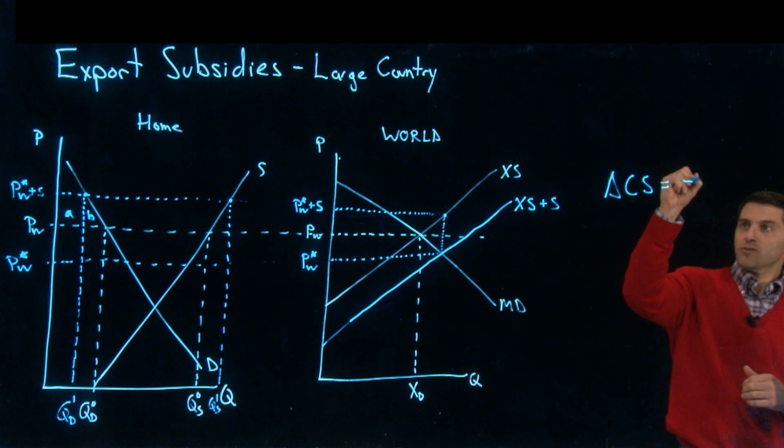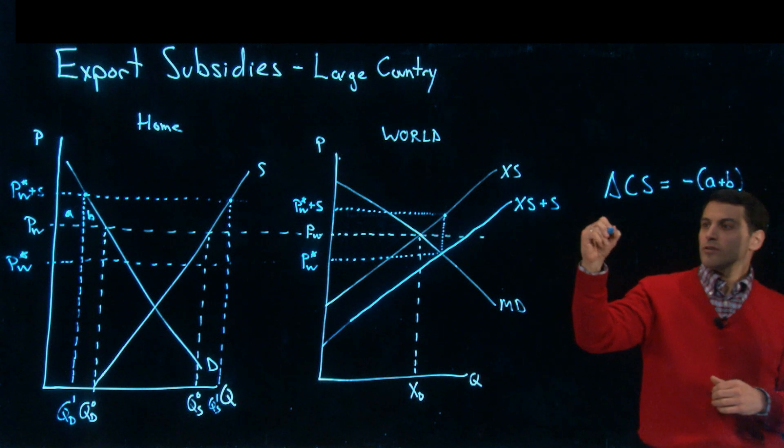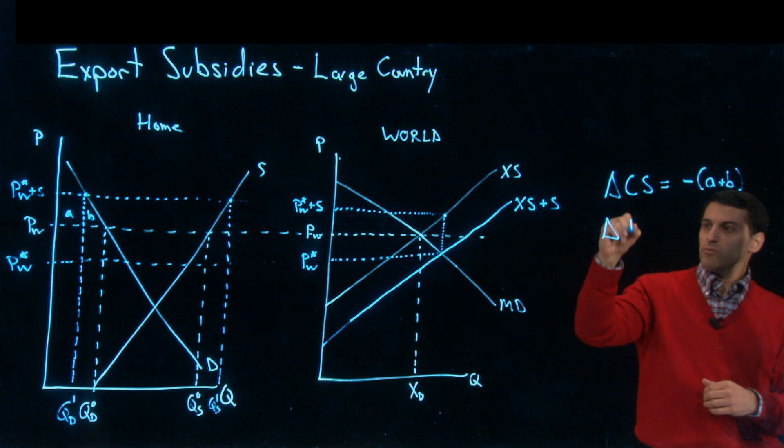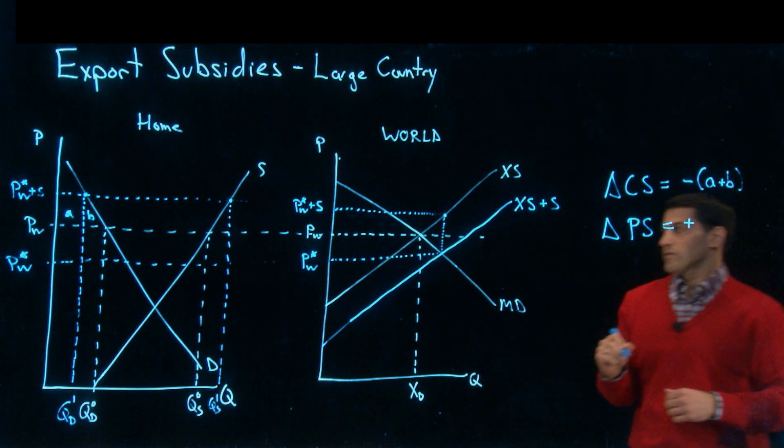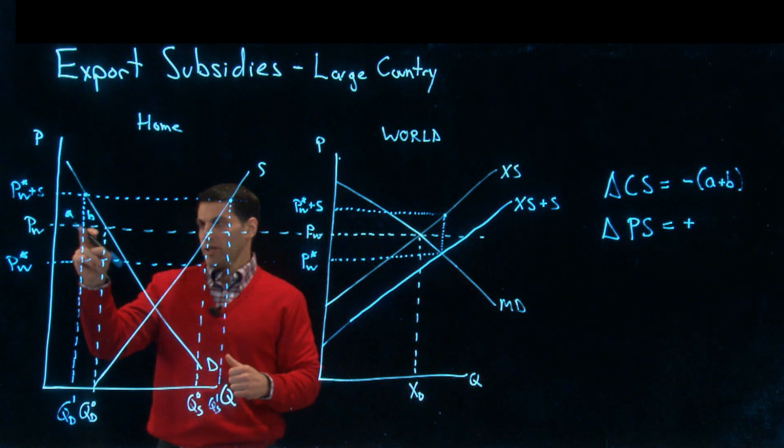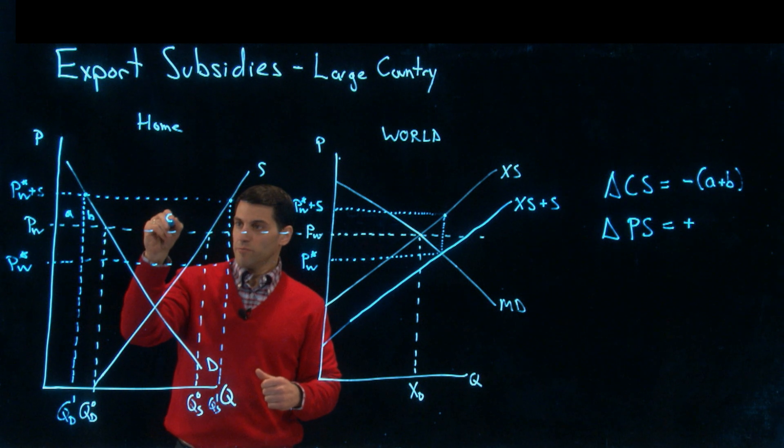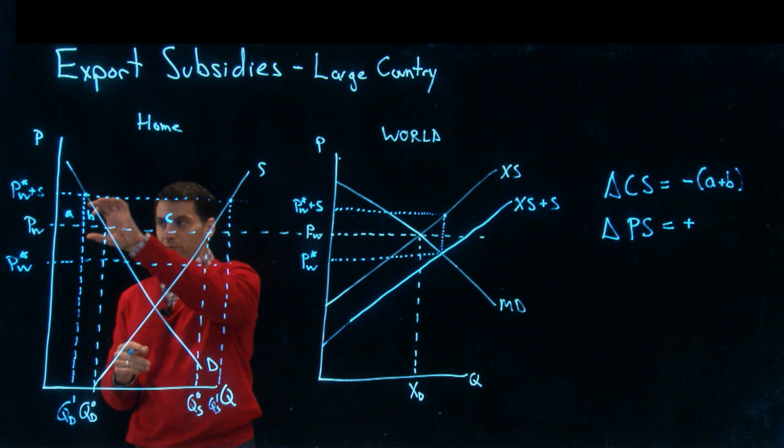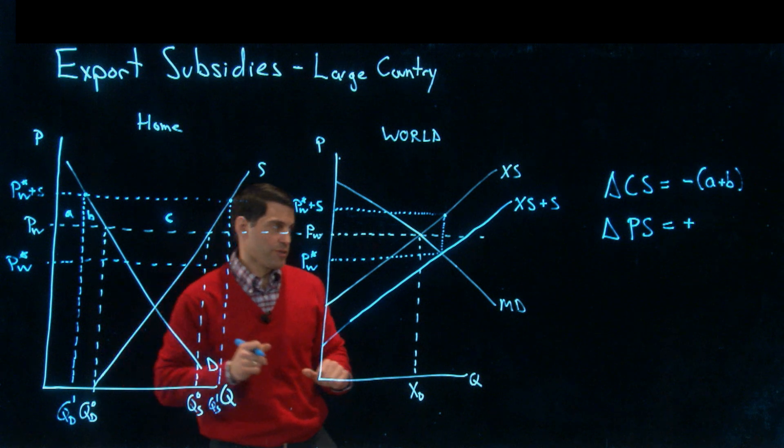Consumers are losing A and B. Producers will once again gain, and their gain is A, B, C because it's the area above the supply curve between the two prices, the original world price and the new world price with the subsidy.